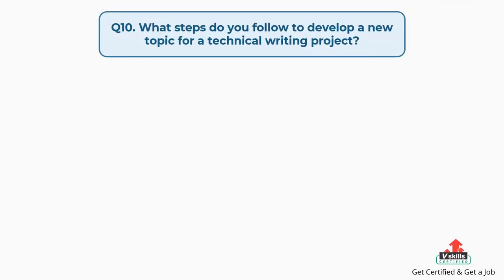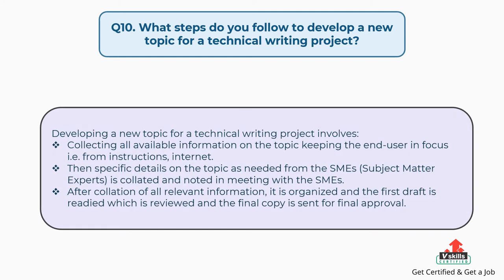Question number ten: what steps do you follow to develop a new topic for a technical writing project? Developing a new topic involves collecting all available information on the topic keeping the end user in focus, from instructions, the internet, and more. Specific details are then collated from subject matter experts. After collation of all relevant information, it is organized and the first draft is readied, reviewed, and the final copy is sent for final approval.